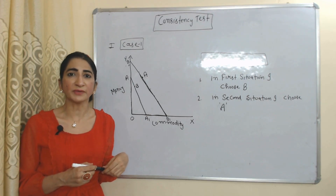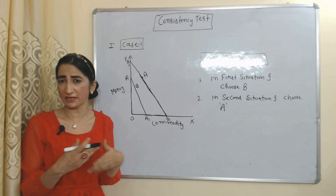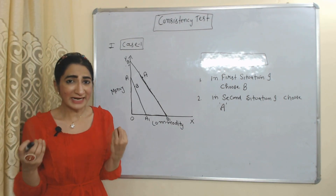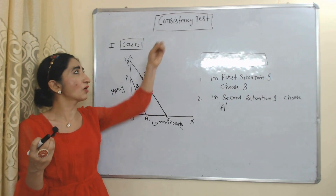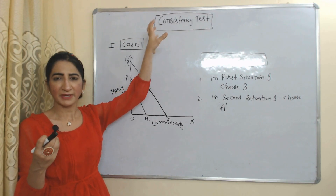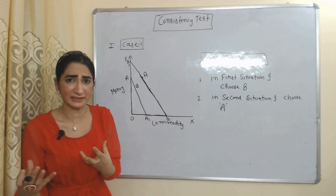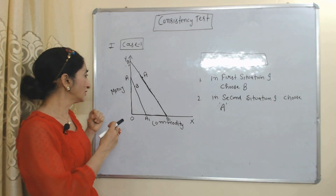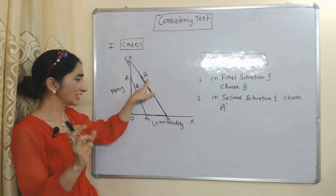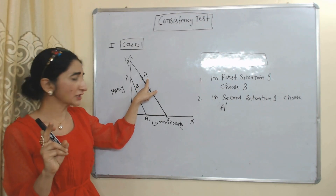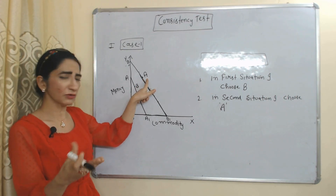According to Hicks, consumer behavior must show consistency. Consumer should not change his behavior again and again. That's why, in order to assess consistency, Hicks talks about the consistency test. With the help of this test, we will see whether consumer behavior is consistent or not. In the first case, we have two options A and B. A is the first best option and B is the second best option — if A is not available, then the consumer will choose B, otherwise always A.